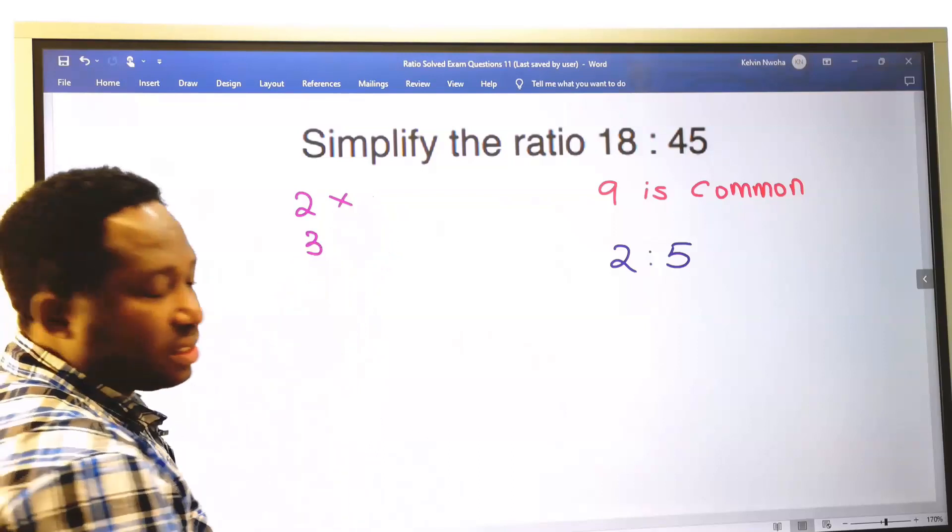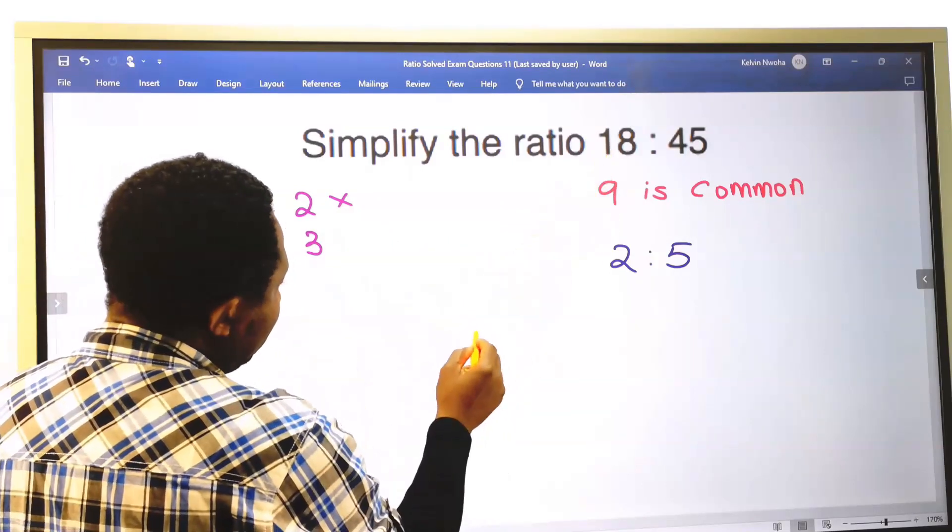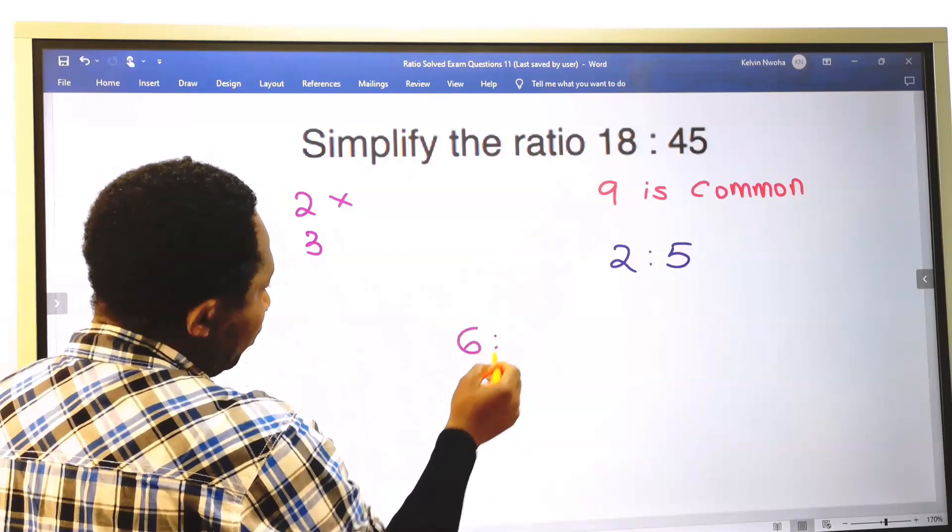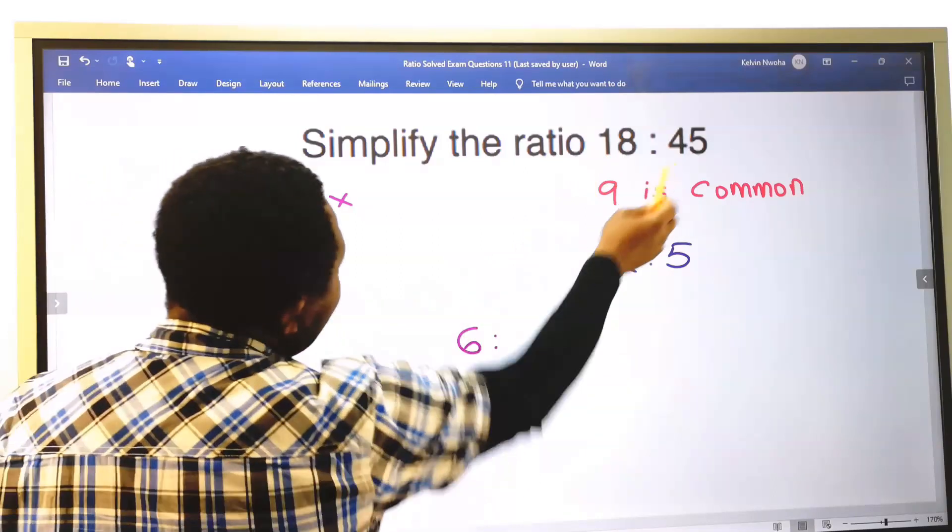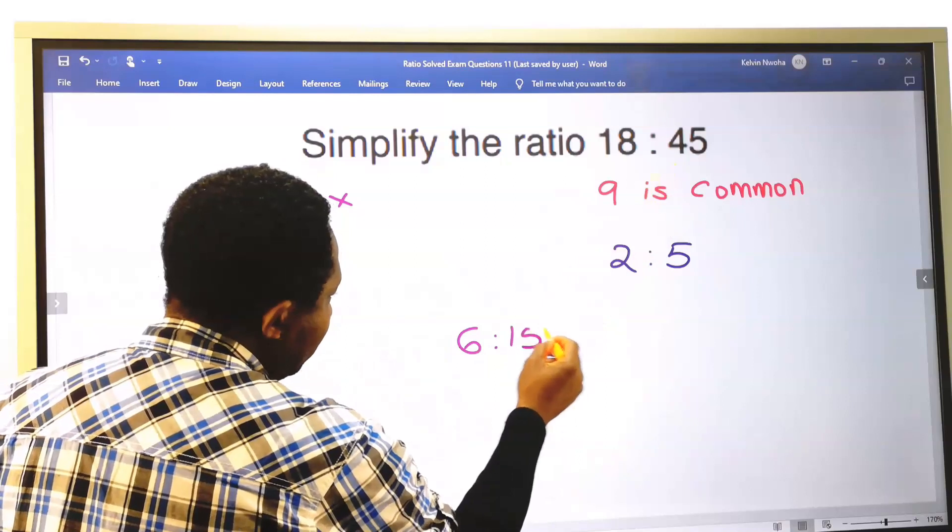Let's try 3. Next, 3 into 18 is 6, ratio 3 into 45 is 15.